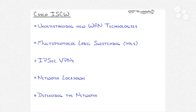Finally, when we look at defending the network, we're going to look at a new feature called the Cisco IOS Firewall, which is a repackaging of an old feature called CBAC. We'll then look at implementing IPS — intrusion prevention systems — on your routers to defend the network. I hope you enjoy the series.